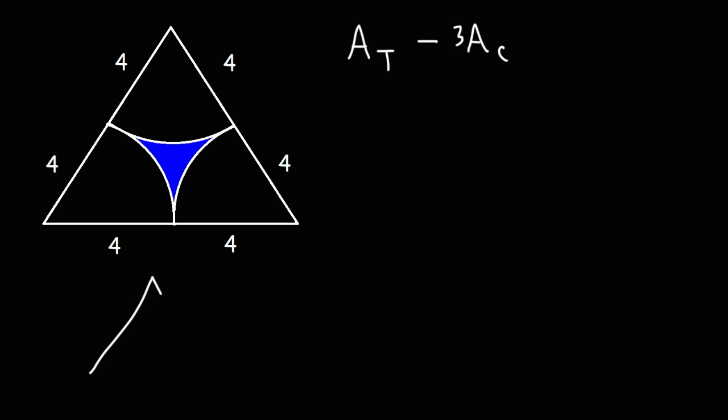Now what we have is an equilateral triangle. Each side of the triangle is 8 so all sides are the same. To calculate the area of an equilateral triangle we could use this formula: it's equal to the square root of 3 over 4 times s squared, where s is the length of a side of that equilateral triangle.